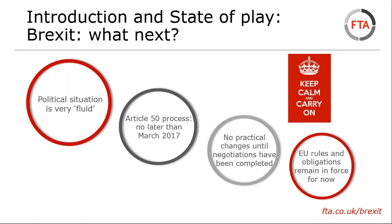Minimizing the risk of delays and red tape at borders is likely to be crucial for government negotiations, with a particular focus on the land border with the Republic of Ireland. We will also try to focus on ensuring that permits are not needed to operate in the EU - that will be a priority for transport. However, limiting immigration is likely to be a red line for the government in negotiations, so we'll need to make sure that transport and freight are not used as negotiation tools. Government is currently inviting evidence in four key areas: immediate risks to industry and actions to mitigate these; what government should do during negotiations to boost industry's confidence; industry's priorities for the future relationship with the EU; and priorities for the UK's relationship with the rest of the world.